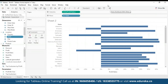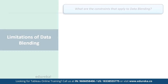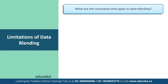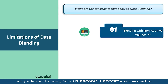Let me go back to my presentation. Now, limitations of data blending — what are the constraints that apply to this method? First of all, blending with non-additive aggregates: there are some blending limitations around non-additive aggregates such as COUNT DISTINCT, MEDIAN, and raw SQL aggregates.